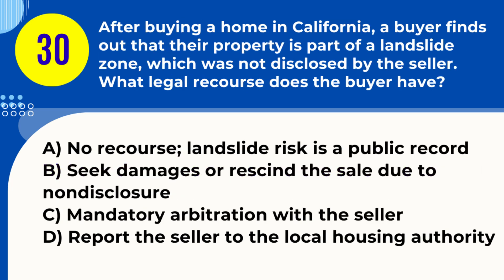Question 30. After buying a home in California, a buyer finds out that their property is part of a landslide zone, which was not disclosed by the seller. What legal recourse does the buyer have? A. No recourse; landslide risk is a public record. B. Seek damages or rescind the sale due to non-disclosure. C. Mandatory arbitration with the seller. D. Report the seller to the local housing authority. Answer: B. Seek damages or rescind the sale due to non-disclosure. Explanation: In California, failure to disclose a property's location in a landslide zone can lead to legal recourse for the buyer, such as seeking damages or rescinding the sale.